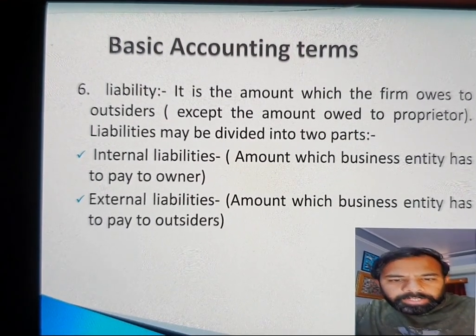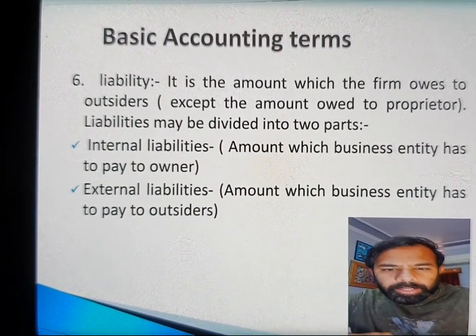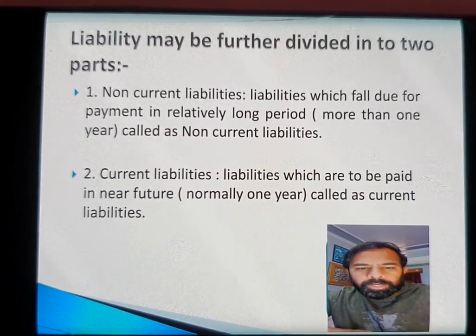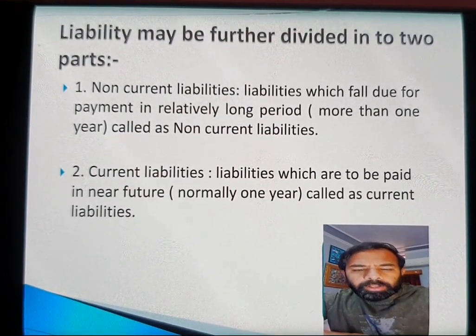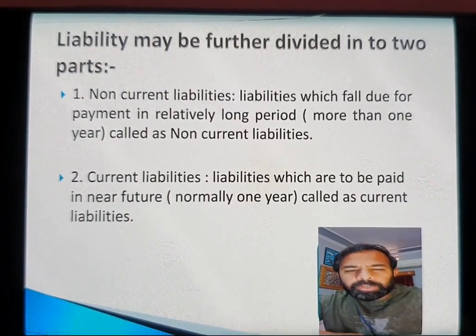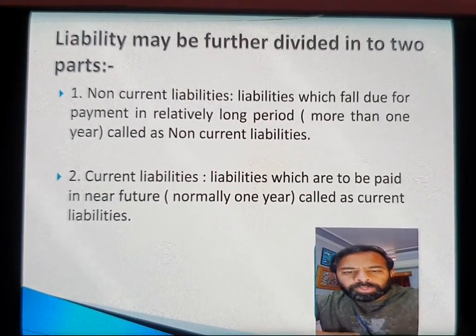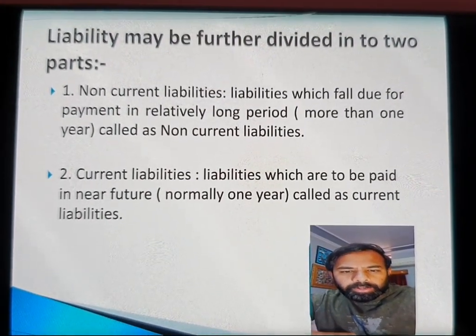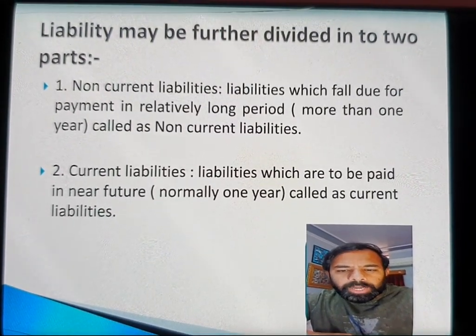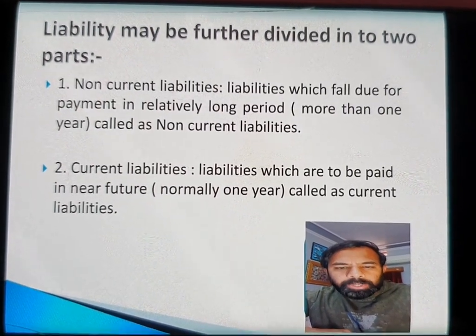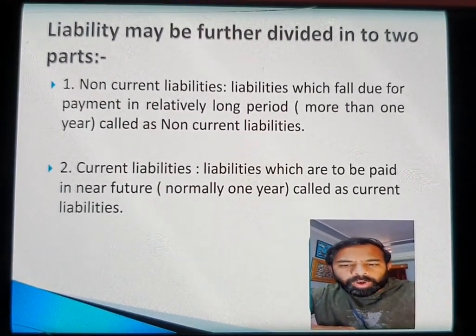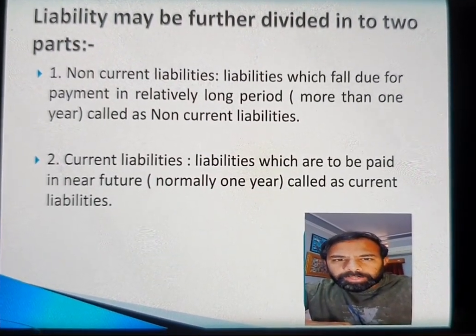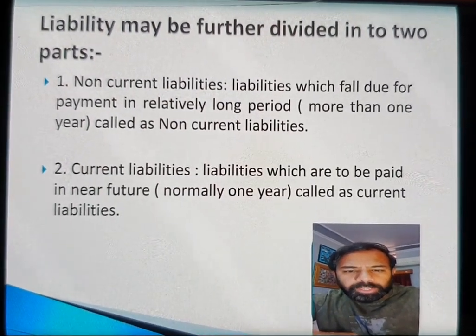Liability is further divided into two more categories: non-current liability and current liability. Non-current liability means the liability which falls due for payment in a relatively long period — that is, more than one year. Examples include debentures and loans. Current liability refers to liabilities which are to be paid within a period of one year. Examples include bills payable and creditors.